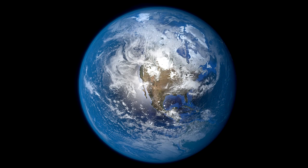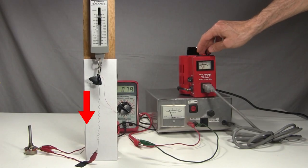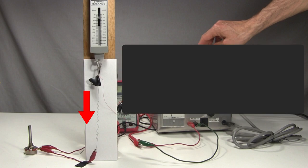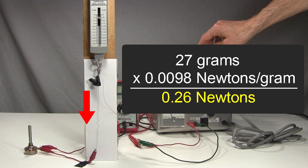But mass isn't force. Luckily I'm at the Earth's surface, and I'd cleverly arranged for the wire to be pulling downward. That allows me to multiply that 27 grams by 0.0098 newtons per gram, to get 0.26 newtons of pulling force.